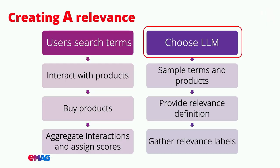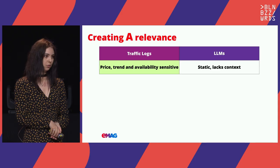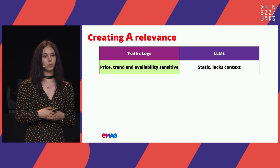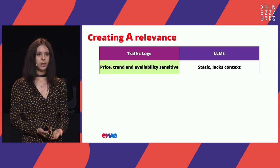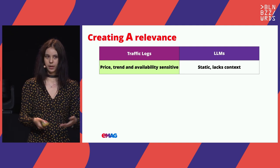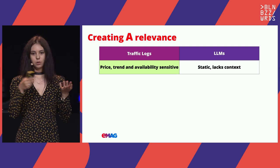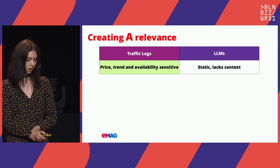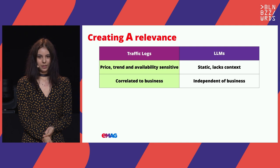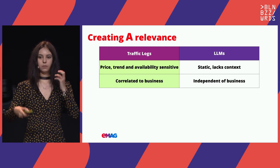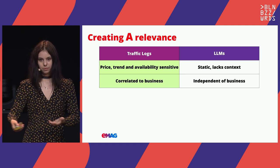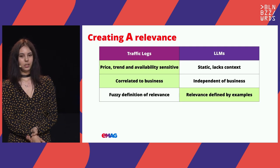So we have the two approaches — how do they differ in the way we construct them and as an end result? First of all, since traffic logs are based on users who act like market analysts in a sense, they are price, trend, and availability sensitive. LLMs usually lack context and cannot as of now take into consideration variable factors like price — they are only able to give a relevance label for the term and product pair at one singular point. Moreover, traffic logs are highly correlated to business metrics, so it makes more sense in theory to use them to construct your relevance target for your learning-to-rank model if your goal is to improve business metrics.